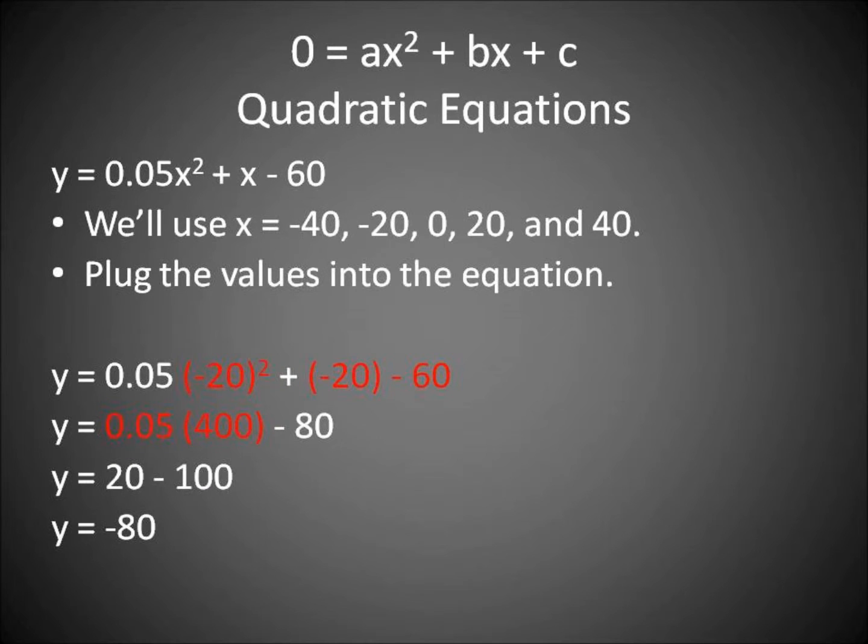Plug in negative 20 squared. We get negative 20 minus 60. Negative 20 squared is 400. Negative 20 minus 60 is negative 80, giving us 20 minus 100. Y equals negative 80.